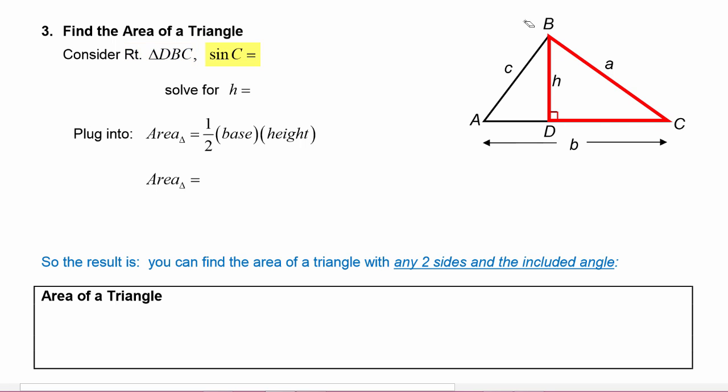Then the sine of C would be the opposite leg which is h divided by the hypotenuse which is a. If we solve this equation for h, then we would cross multiply the a up to the top and we would get h is equal to a times the sine of C.